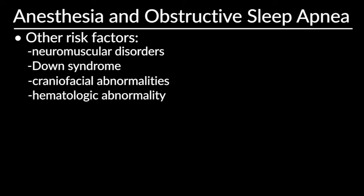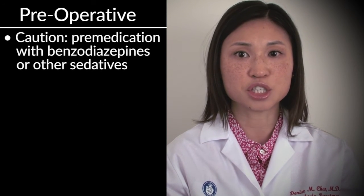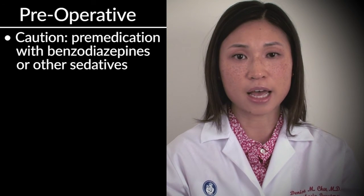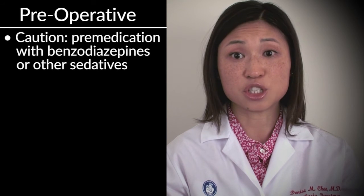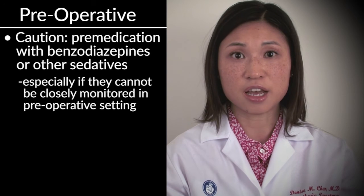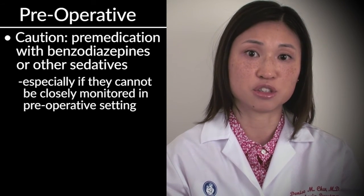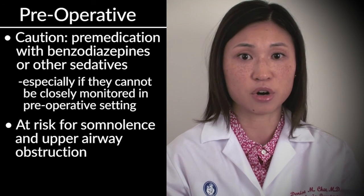You should also inquire about easy bruising or frequent nosebleeds, because this may indicate a hematologic abnormality. In these patients, or if there's a family history of bleeding problems, consider performing coagulation studies — though this should be done on a case-by-case basis, as not every patient needs coagulation labs checked. When you see them immediately preoperatively, use caution when giving premedication with benzodiazepines or other sedatives, especially to patients with obstructive sleep apnea who can't be closely monitored, as these are the patients at risk for somnolence and upper airway obstruction.